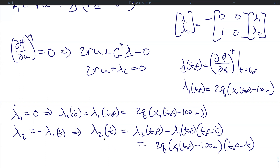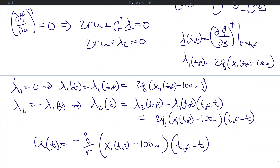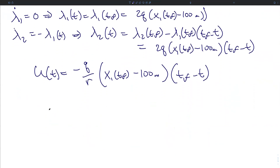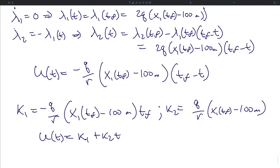We now have a value for lambda-2, which we plug back in to write the optimal control input: u-star equals negative Q over R times (x1 at tf minus 100 meters) times (tf minus t). In terms of implementing this as a controller, we define k1 as negative Q over R times the difference times the final time, and k2 as Q over R times the difference between the final position and 100 meters, so the control is written as k1 plus k2 times t.